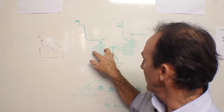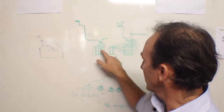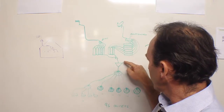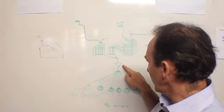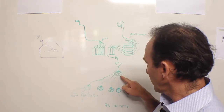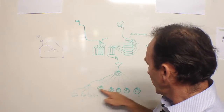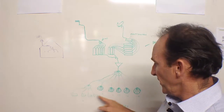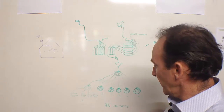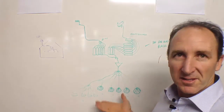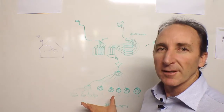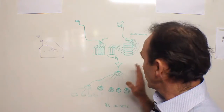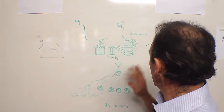So all the digital free-to-air signals combined with the modulator signals from VAST go into one amplifier, through a splitter, then through a heap more splitters — this is called a star configuration — then a heap of taps at the end. In this very simple diagram we've got a hundred outlets. That's an MATV system in a nutshell.